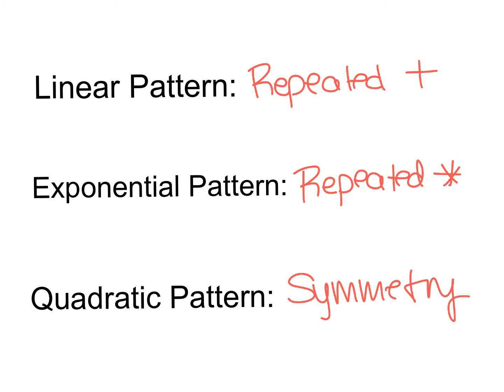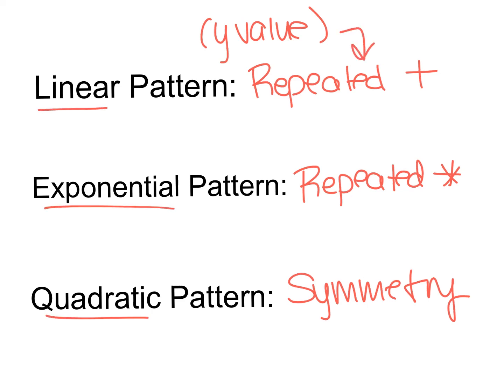To recap: when we had a linear pattern we saw repeated addition; when we had an exponential pattern we saw repeated multiplication; and when we saw a quadratic pattern we saw symmetry. This all focused on those y values — in all cases x only added 1 each time, but the y values had different patterns that allowed us to identify linear, exponential, and quadratic.